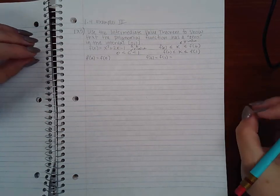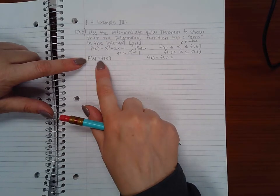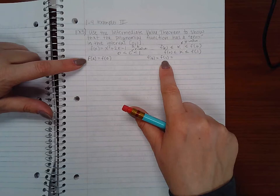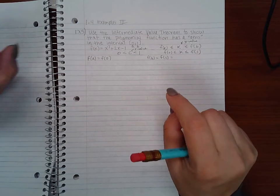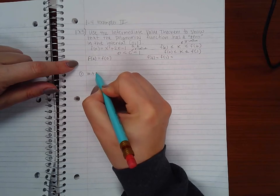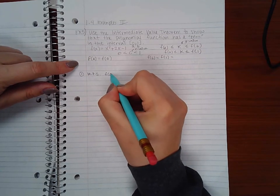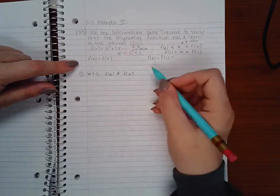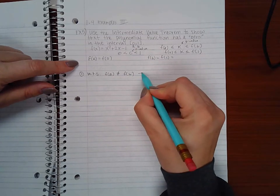So the first two things that we need to show is that f(a) or f(0) and f(b) which is f(1) are not the same. That's one of the first key things that we want to show: that f(a) does not equal f(b), so in my case that means f(0) does not equal f(1).